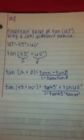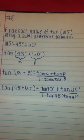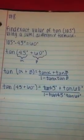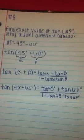So now we just plug everything in. Tan of 45 plus 60 degrees equals tan of 45 plus tan of 60 all over 1 minus tan of 45 times tan of 60.